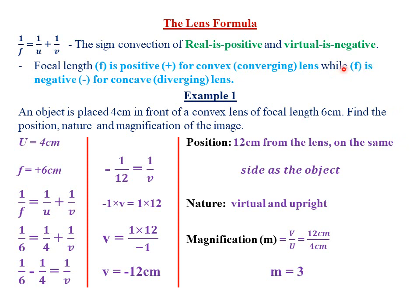On the other hand, f is always negative for a concave or diverging lens. The reason is that a concave lens will always have a virtual or imaginary principal focus that is behind that particular lens. So if the principal focus is imaginary, the focal length will also be virtual, and since all virtual dimensions are indicated by negative, the focal length for any concave or diverging lens will always be a negative value.